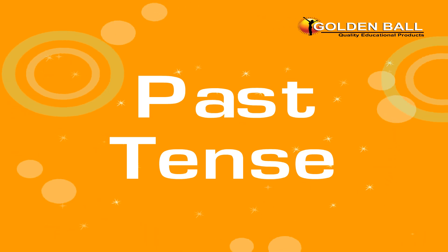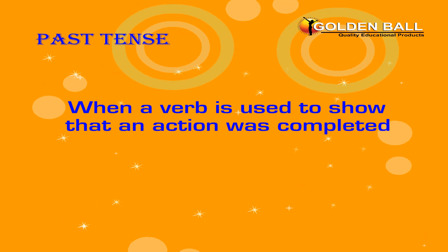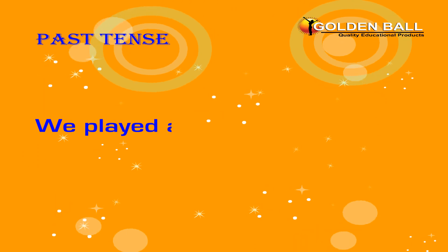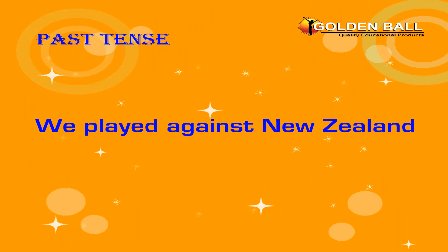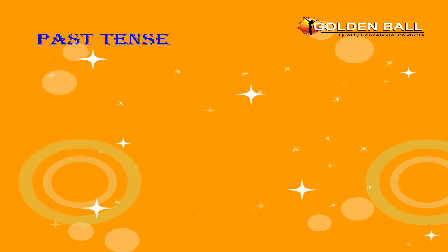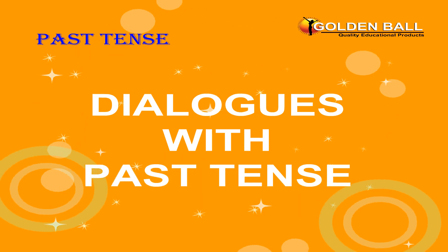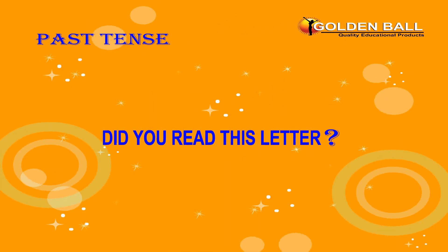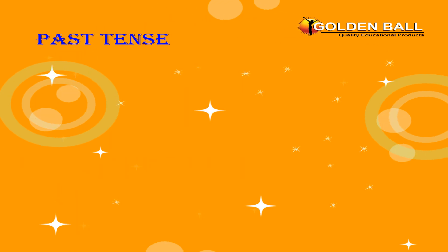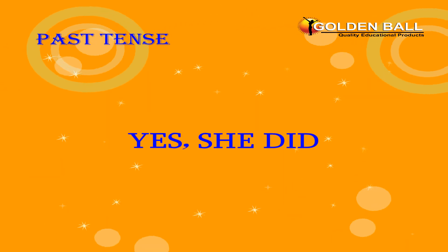Now, past tense. When a verb is used to show that an action was completed, it is known as the past tense. For example, we played against New Zealand. Manu died 4 years ago. Dialogues with past tense. Did you read this letter? No, I didn't. Did Lata come to you in the evening? Yes, she did.